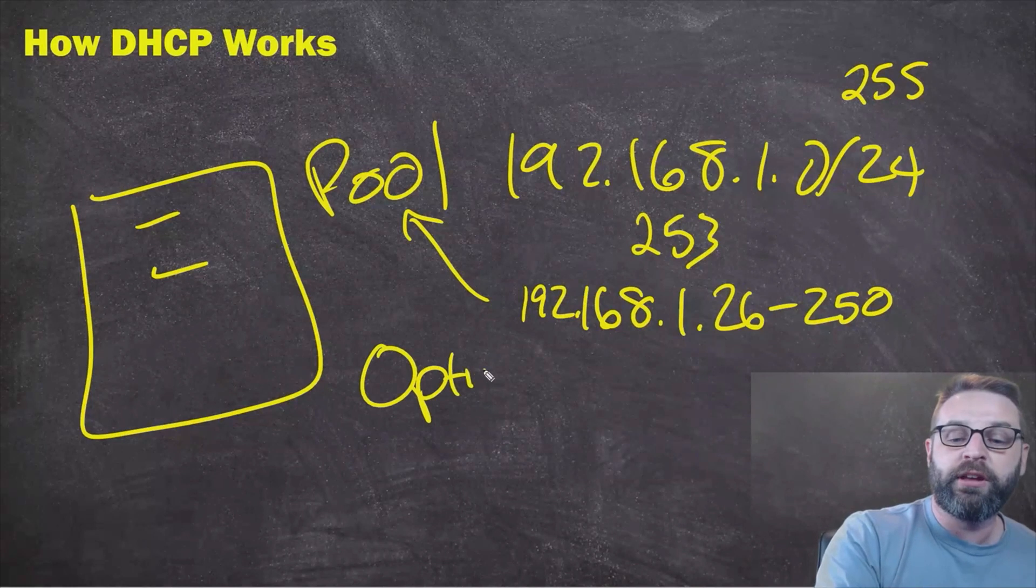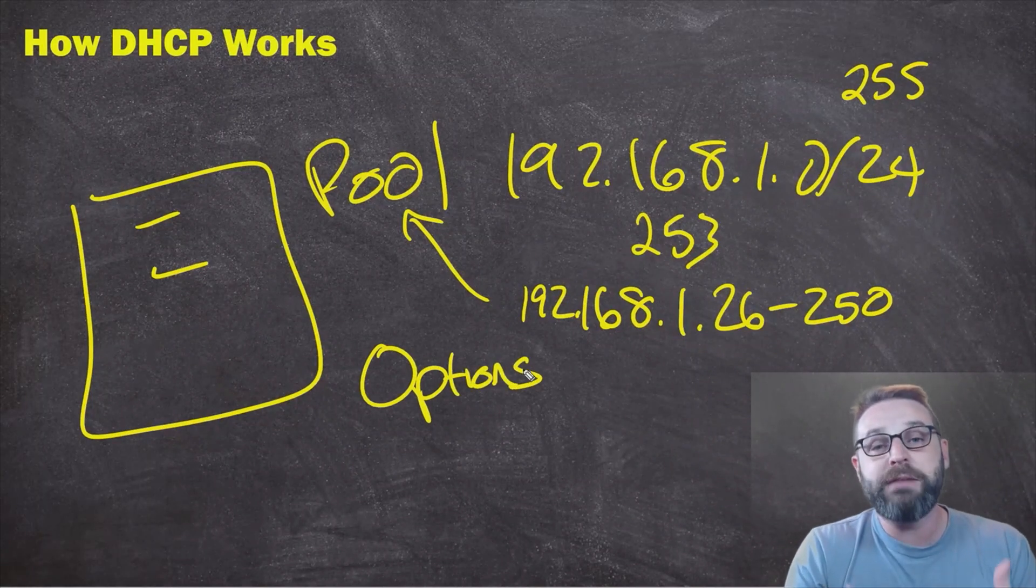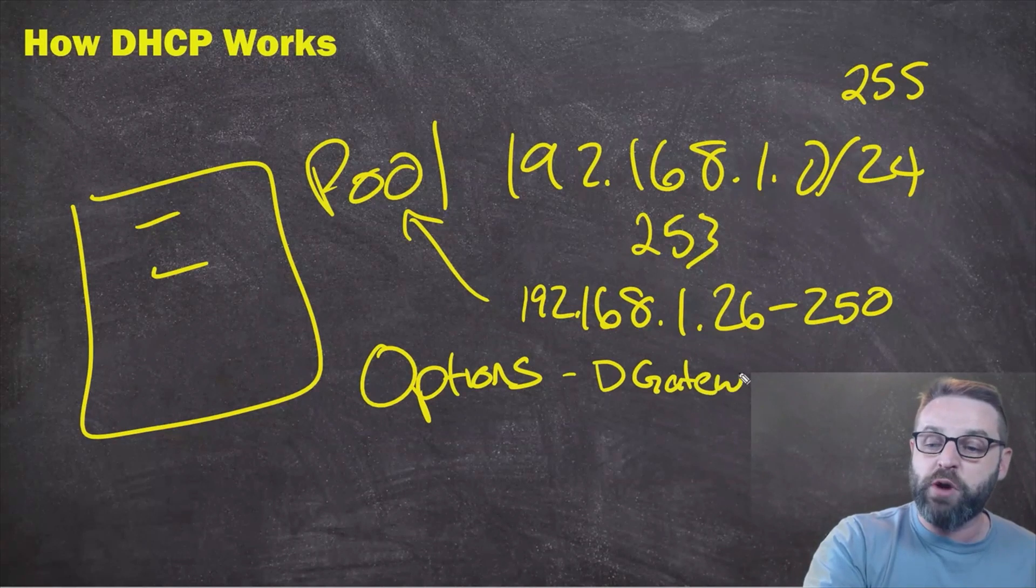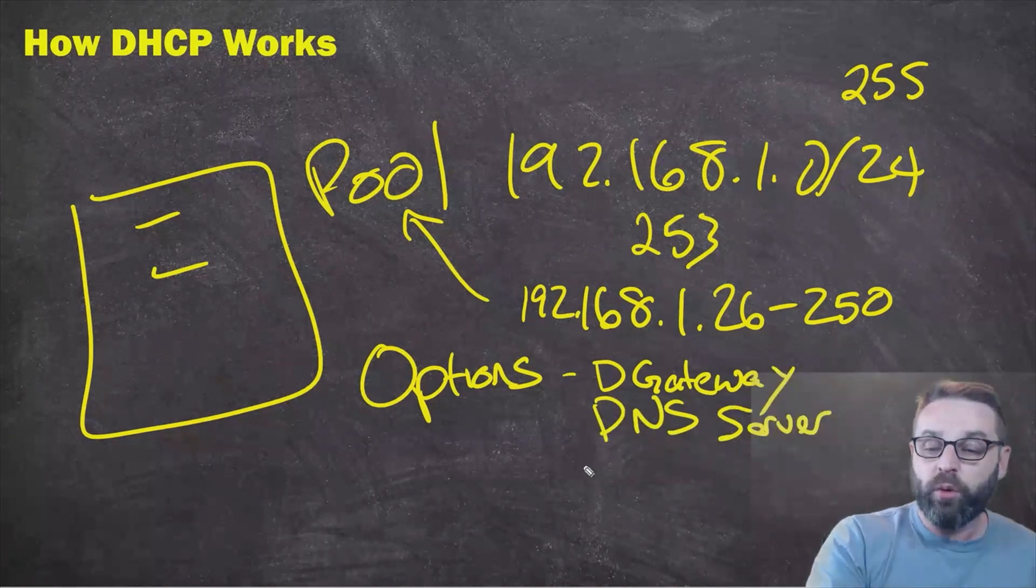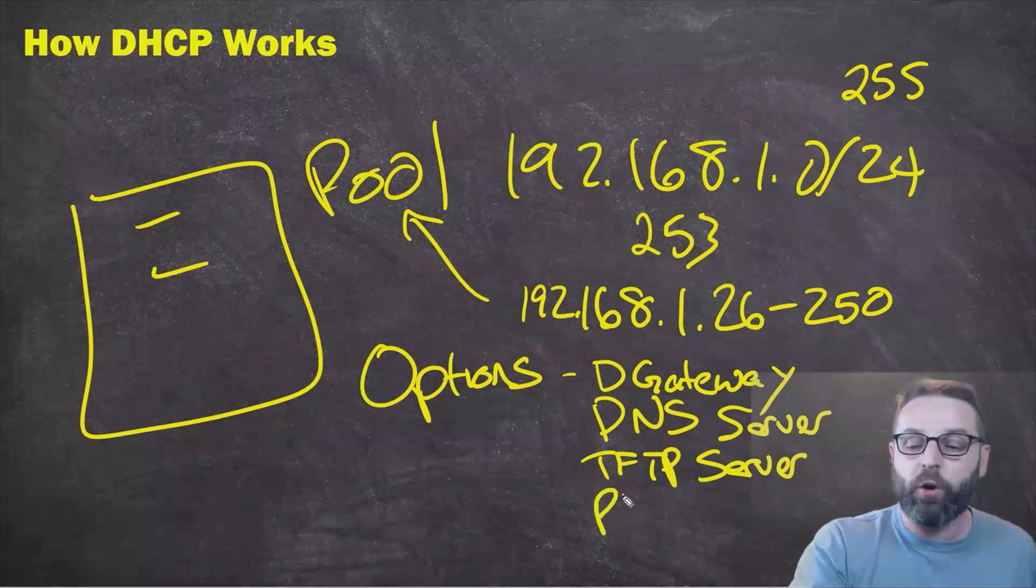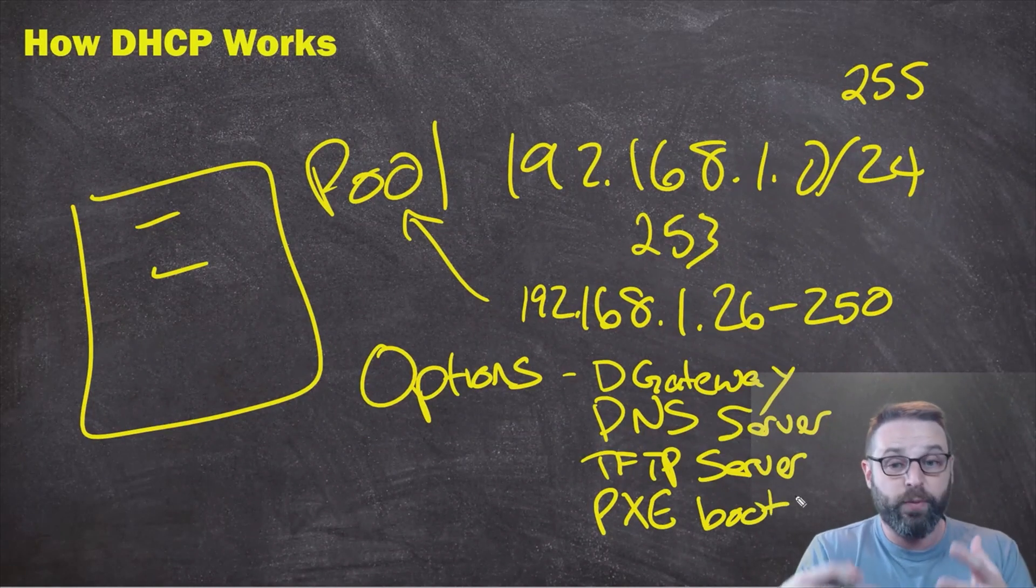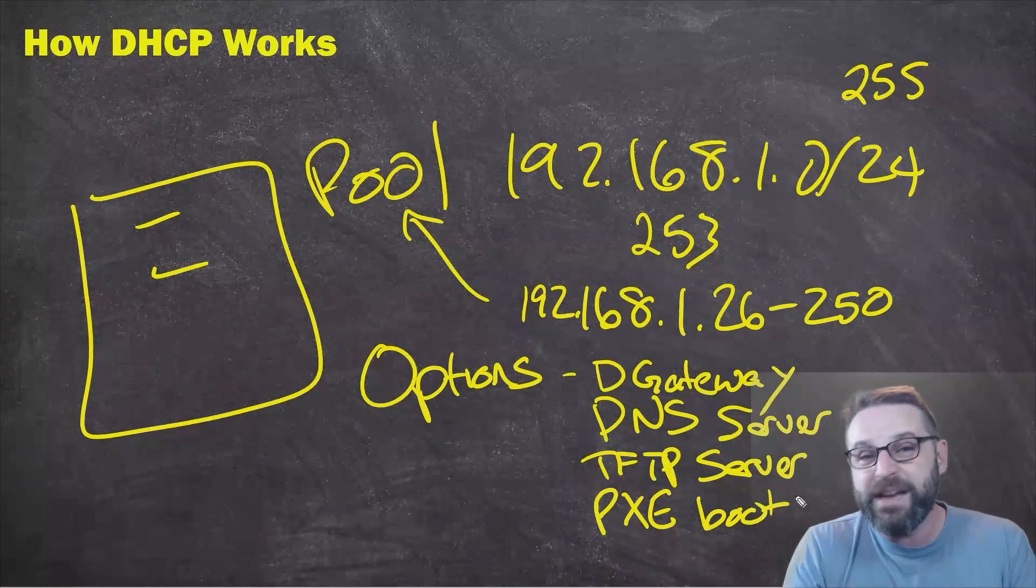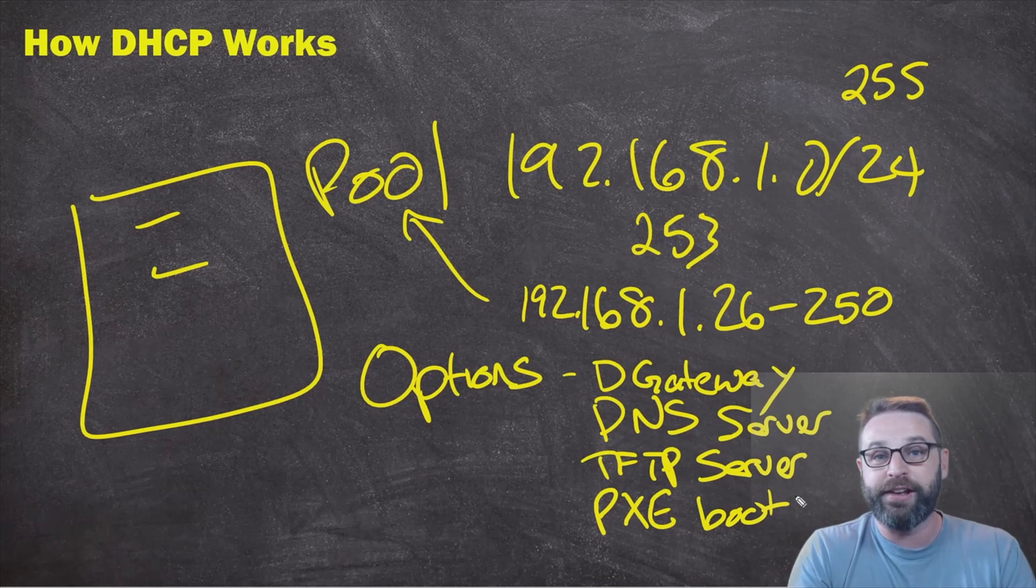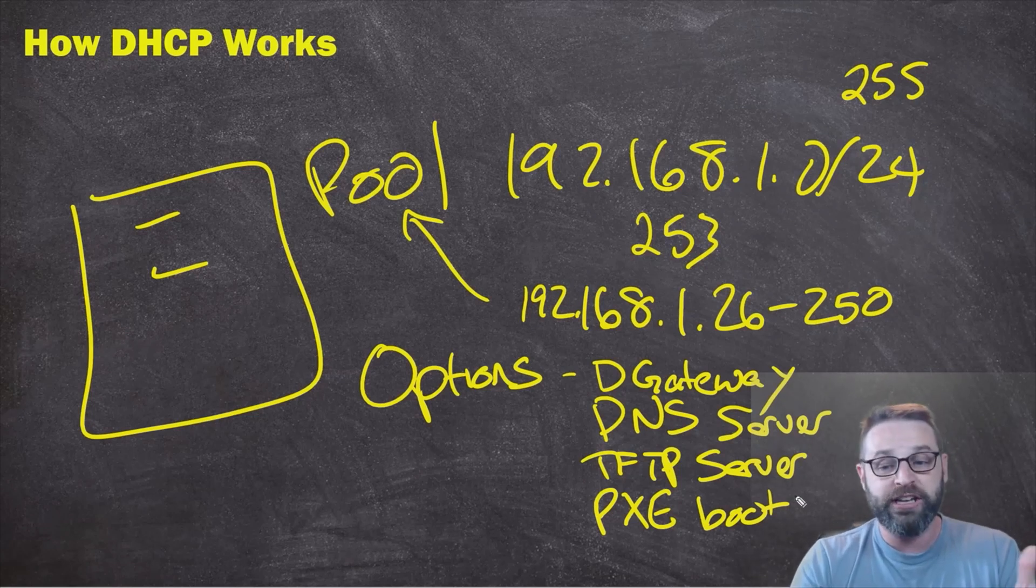We also have to configure something called options. These are additional bits of information that we can provide back when it's time to give them an IP address. Popular options are what is your default gateway? What is your DNS server? Or are you looking for a TFTP server so that you can download a configuration? Or a PixieBoot server so that you can install an operating system over the network? There is a tremendous number of options that can actually be provided back through DHCP. And it's one of the most robust ways that you can actually automate the deployment of an entire enterprise. It's just through DHCP.